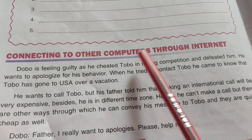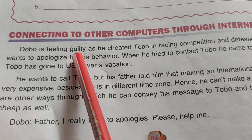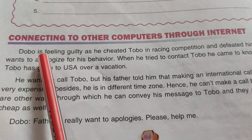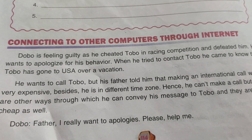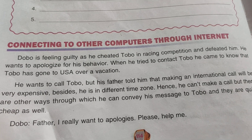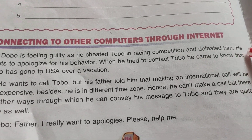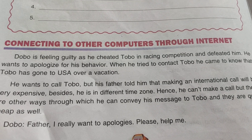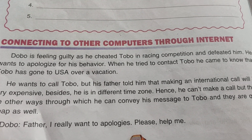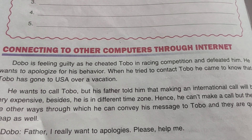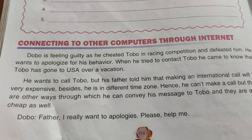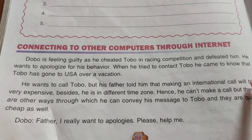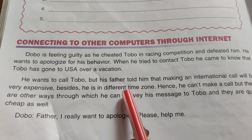Now let's look at connecting to other computers through the internet. Dobu is feeling guilty as he cheated Tobu in a racing competition and defeated him. He wants to apologize for his behavior. When he tried to contact Tobu, he came to know that Tobu has gone to the USA on vacation. He wanted to call Tobu, but his father told him that making an international call would be very expensive, and Tobu is in a different time zone.